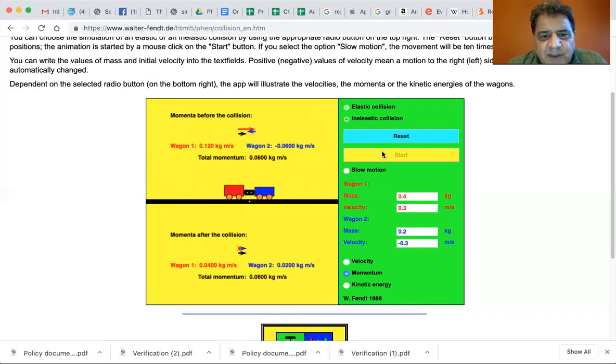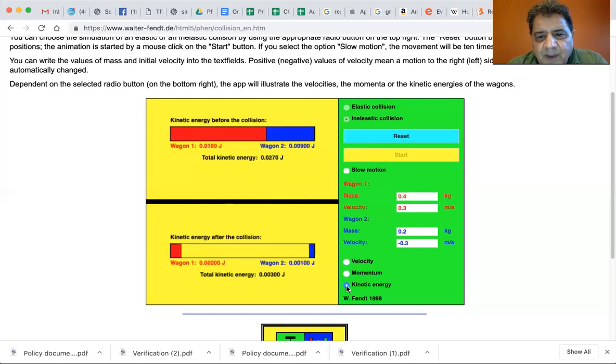0.06 kilogram meters per second is total and 0.06 kilogram meters per second is total. So you have conservation of momentum, but notice the kinetic energy. Some of the kinetic energy has gone into deforming the coupler. So you can see some of the kinetic energy is lost.